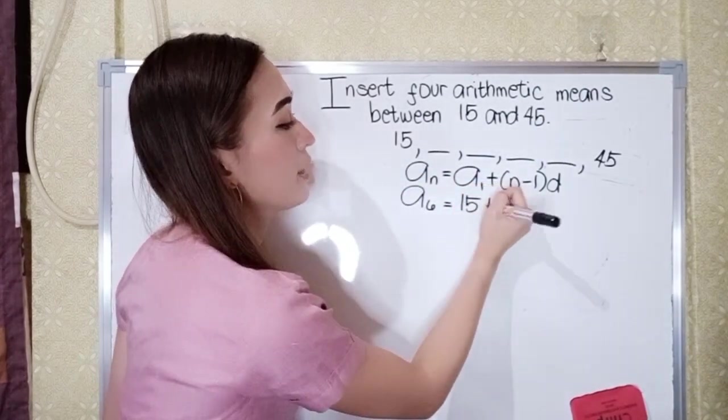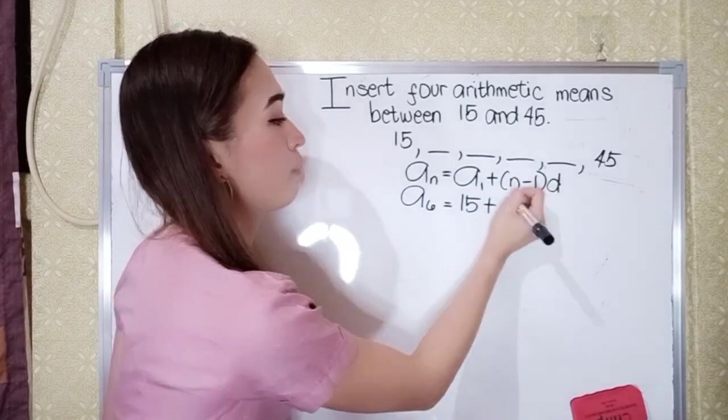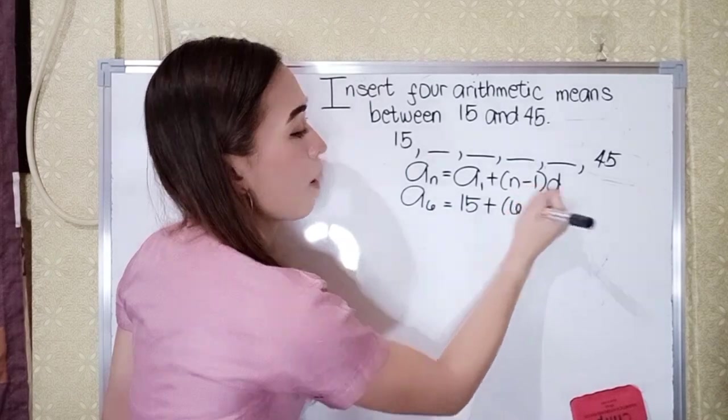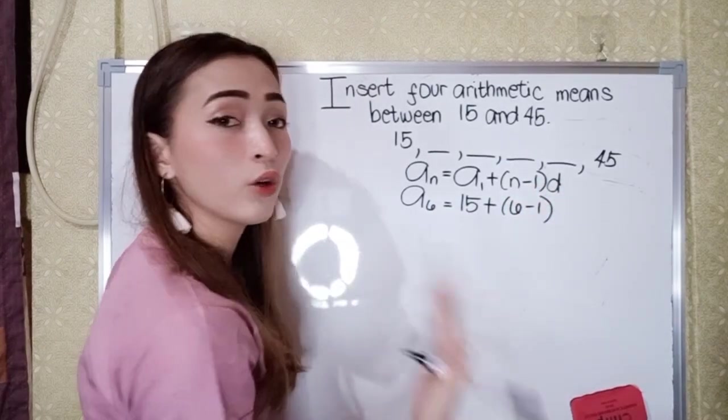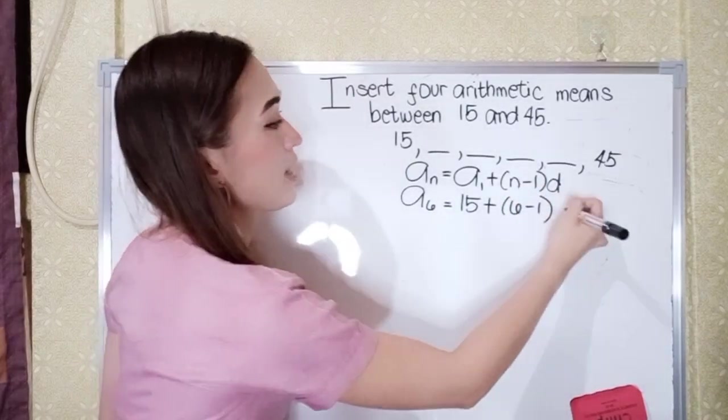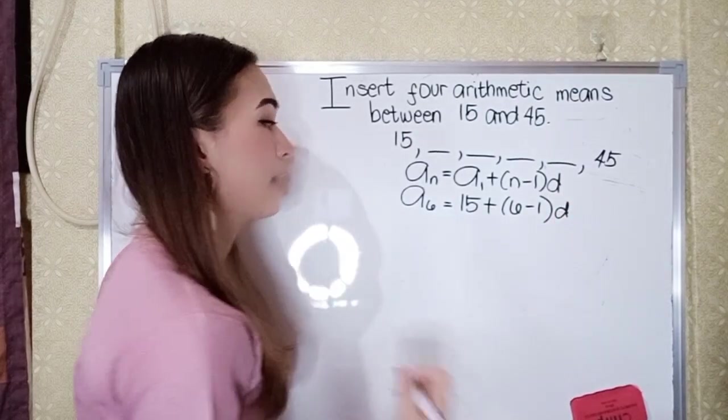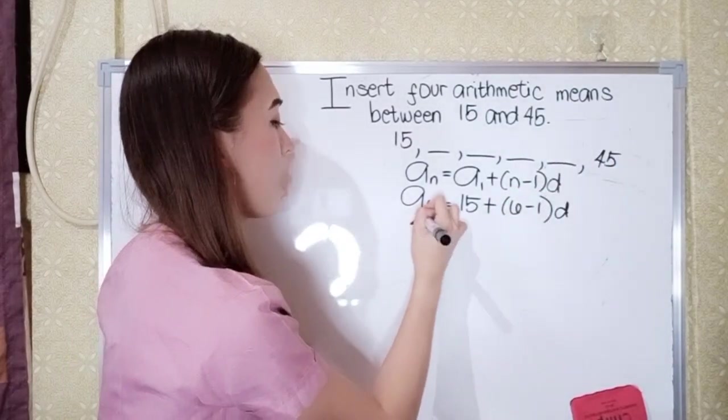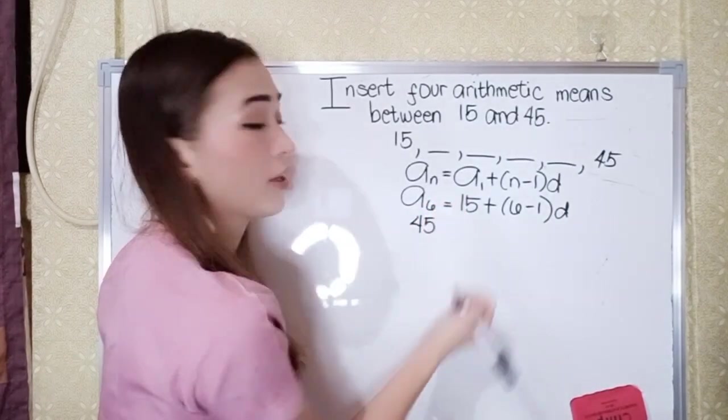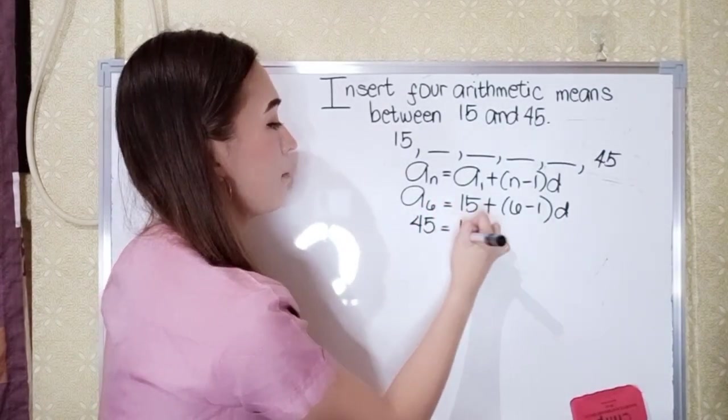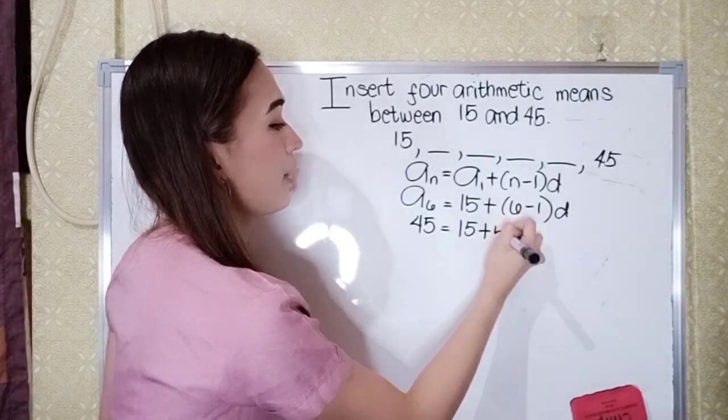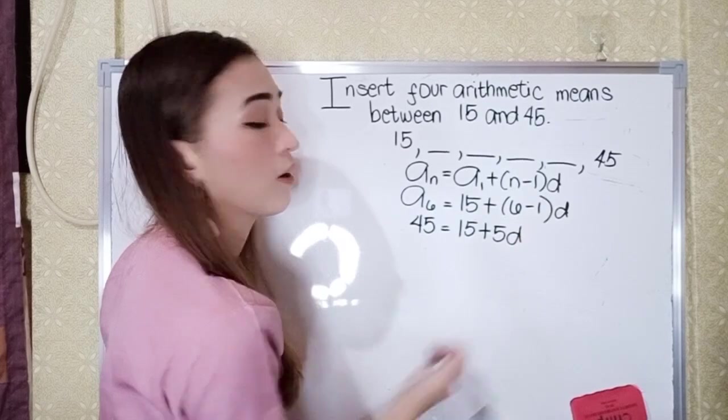Plus, so our n would become 6 because there are 6 terms. So this is 6 minus 1. So we're looking for the distance D. Next, so our A sub 6 is 45. So just substitute 45 here equals 15 plus 6 minus 1 is 5, so 5D.